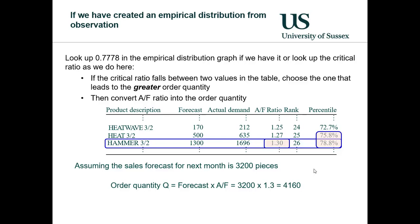What this means in practice is that the actual demand for this particular item is on average 1.3 times more than the forecast we have hitherto used. If we assume, therefore, that the sales forecast for next month is 3200 pieces, we can determine the actual order quantity as this forecast times the AF ratio we just found, which is 3200 times 1.3. This means that the order quantity to minimize overage and underage cost is 4160.